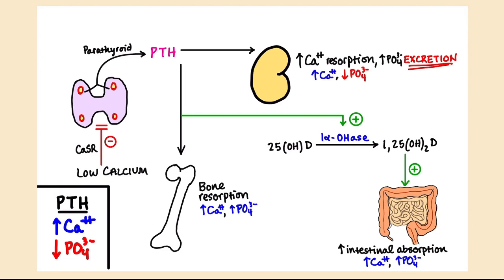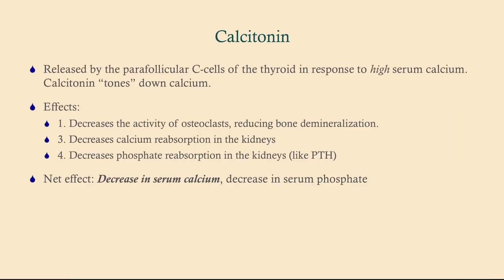Here's a summary picture of PTH effects. The key points at the kidney are increased calcium reabsorption and increased phosphate excretion. PTH also activates 1-alpha-hydroxylase and increases bone demineralization or resorption.